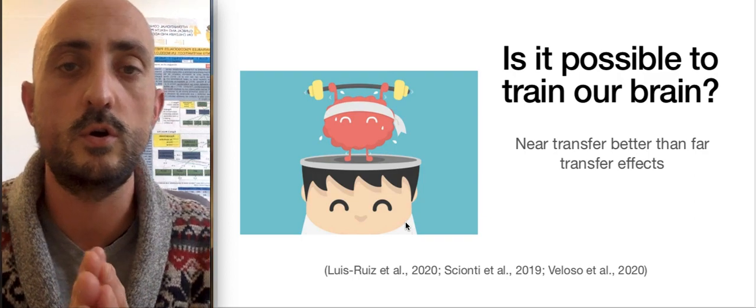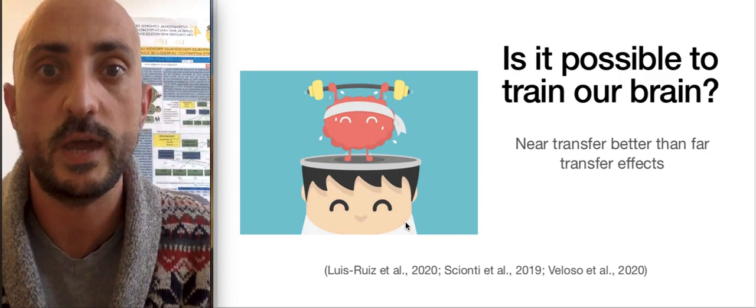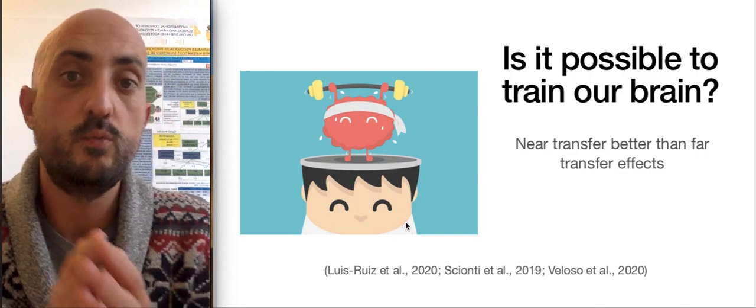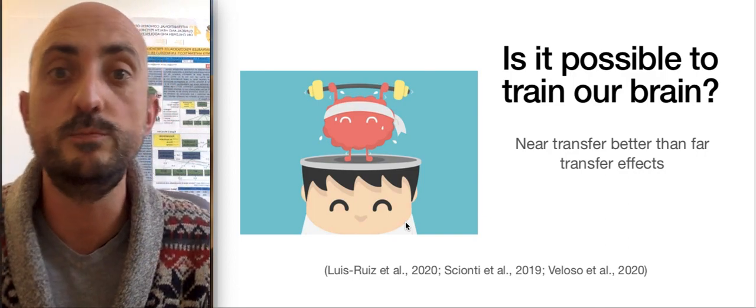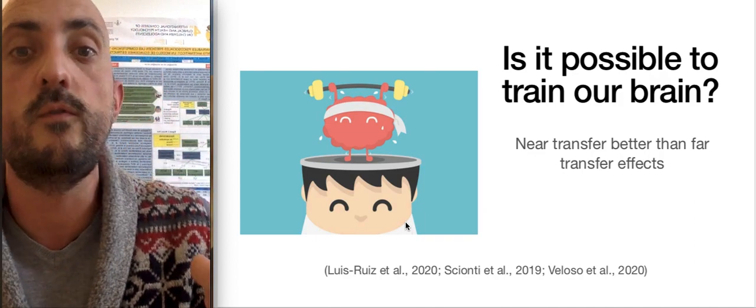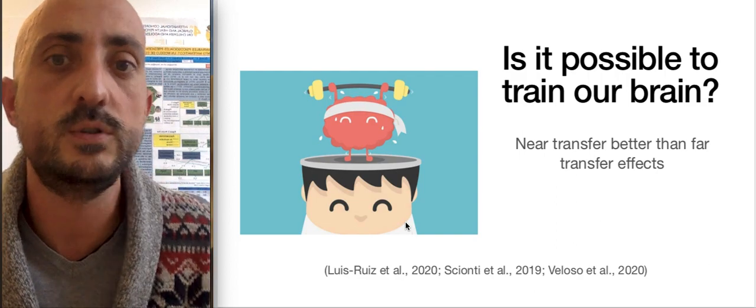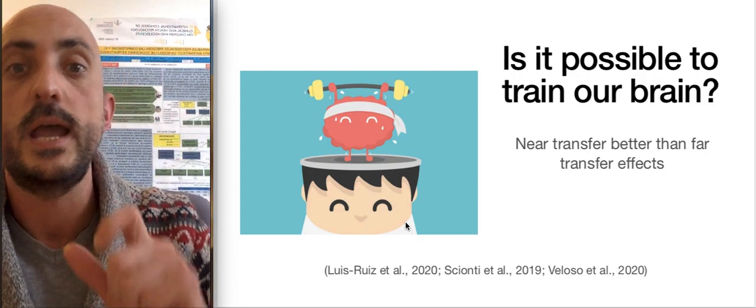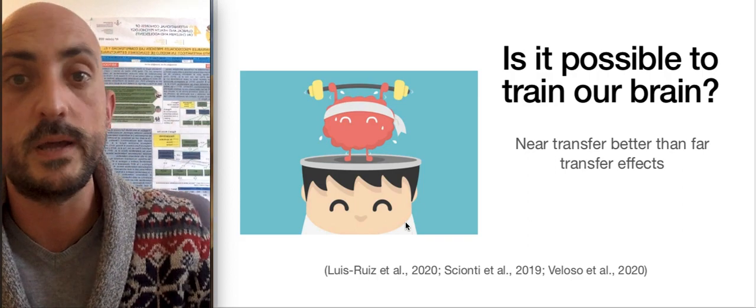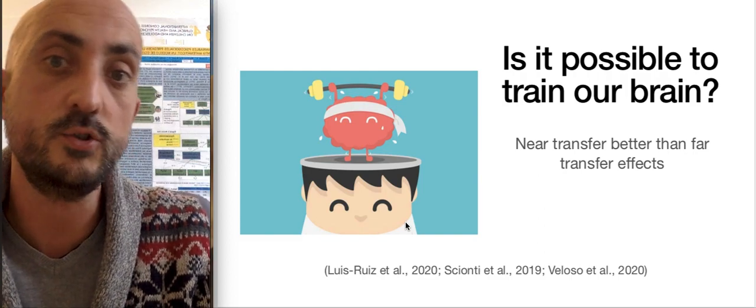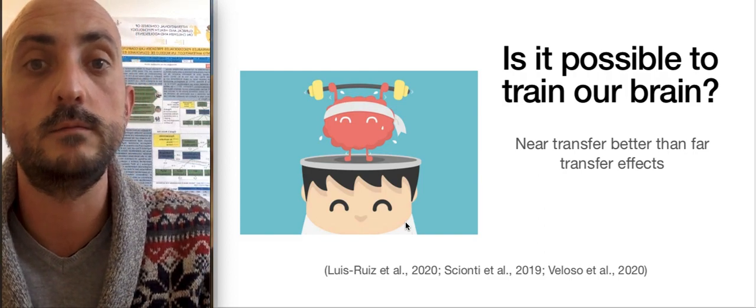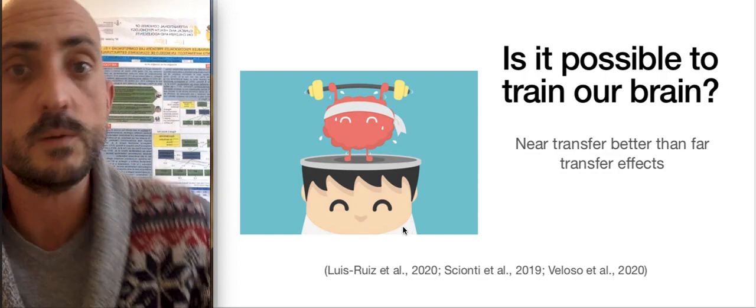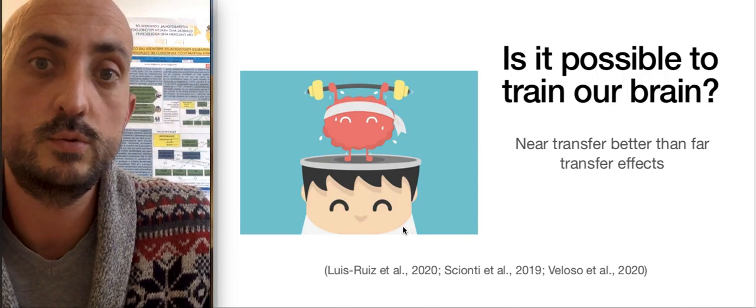For example, we want to train working memory, inhibition or shifting, with games, and we assess if we have improved their working memory skill. If we have played with working memory skills trying to improve working memory skills, we are going to look for near-transfer effects, and some studies have pointed that it could be done. But if we play with working memory games and we look for improvements in inhibition or in complex executive functions, the results are mixed and not conclusive. It is very difficult to find this transfer effect. But we want to look for it, to test it.